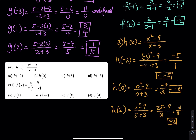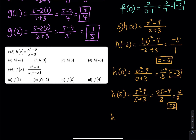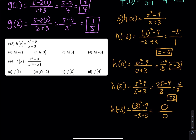And then the last one, h of negative 3: that is negative 3 squared minus 9 over negative 3 plus 3. So I have a 0 in the denominator. The top is 9 minus 9, which is also 0. So 0 divided by 0 is undefined. That is the end of number 3.